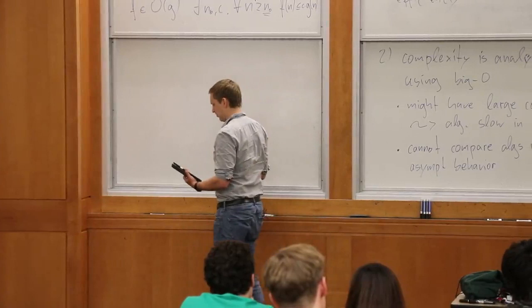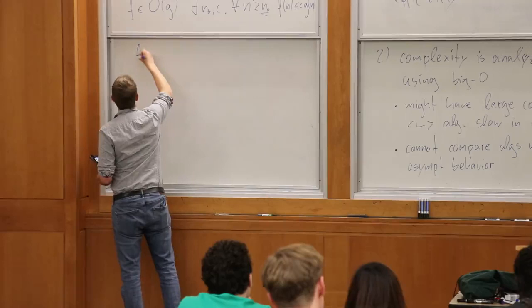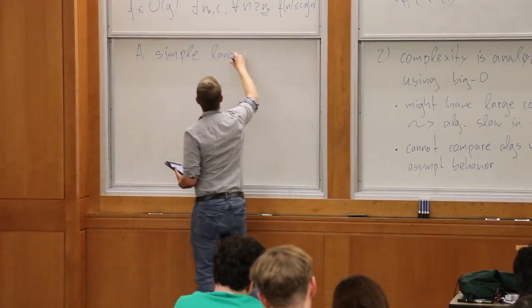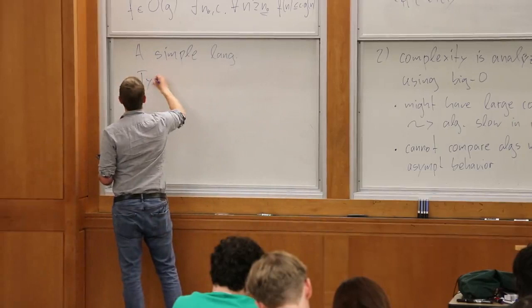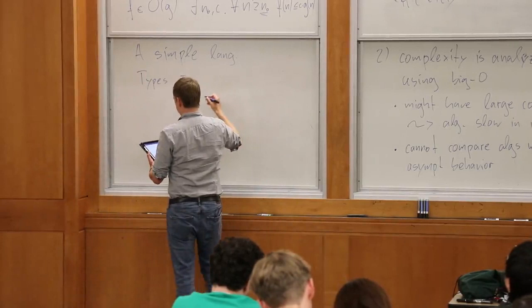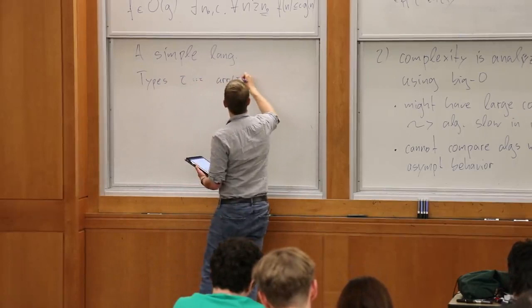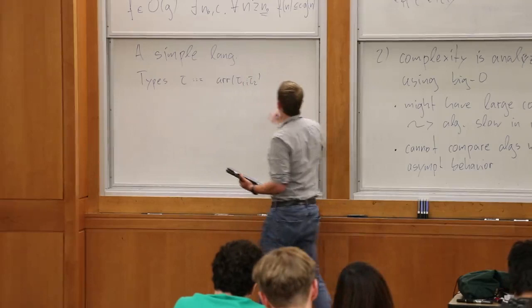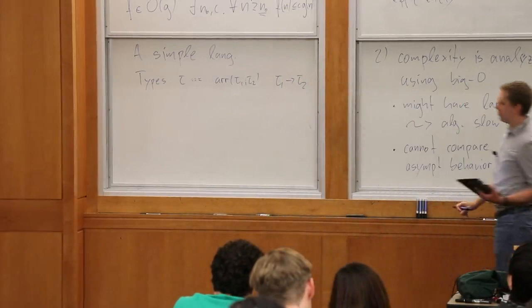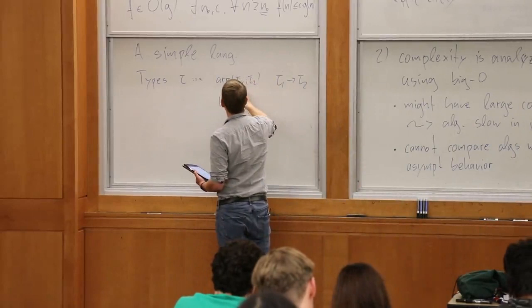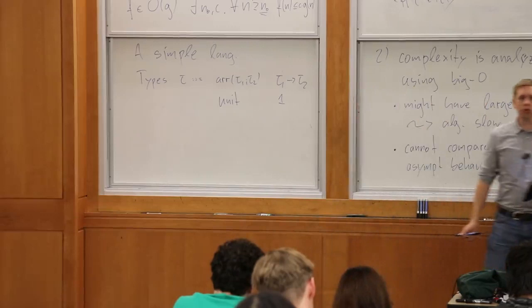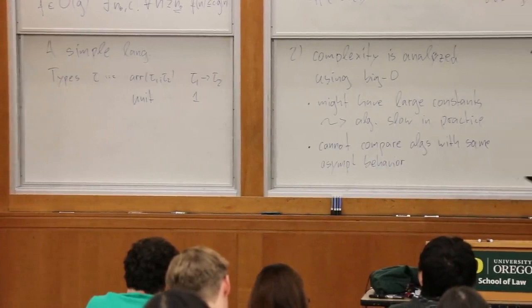Let's start. The topic is cost semantics. We start with a simple functional language. The types tau we have are function types — using the arrow notation — and one concrete type: unit, so that we can actually write a function. The expressions are also very simple.